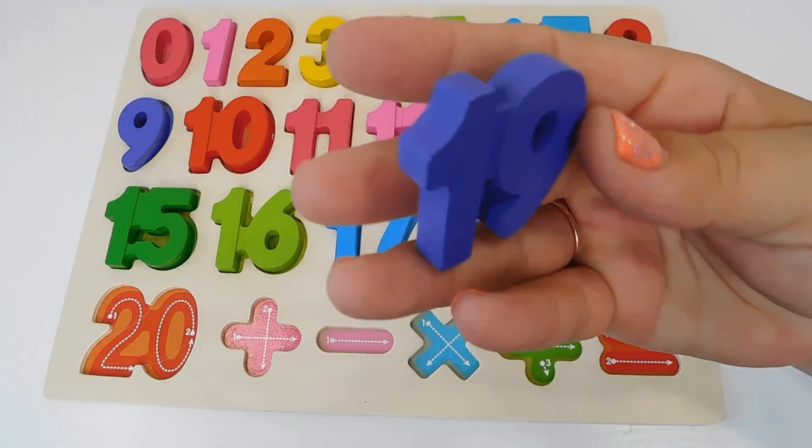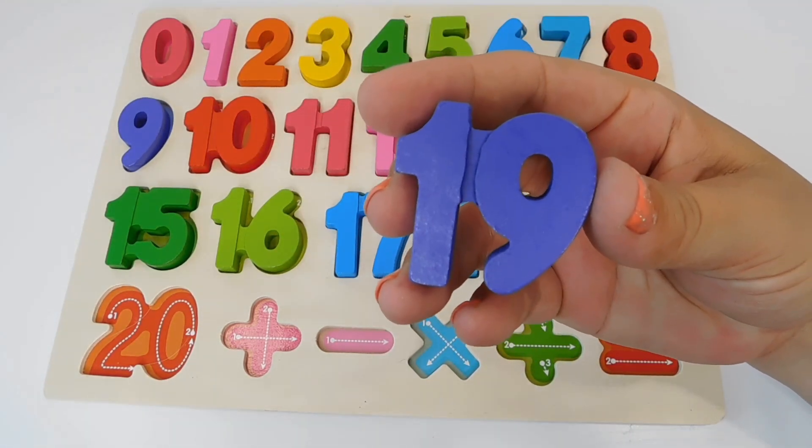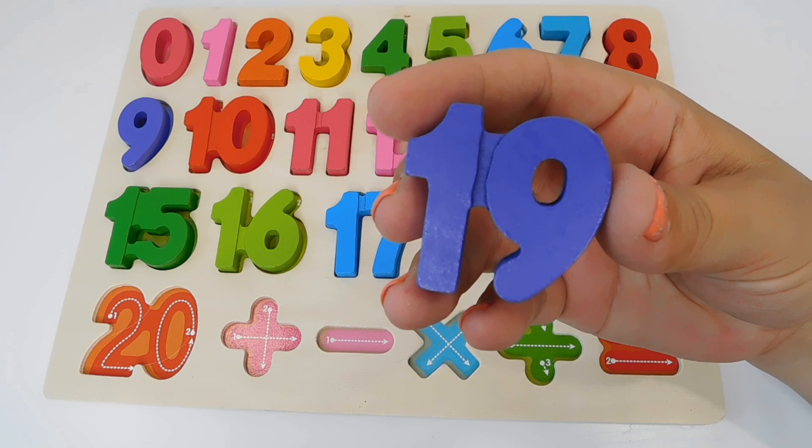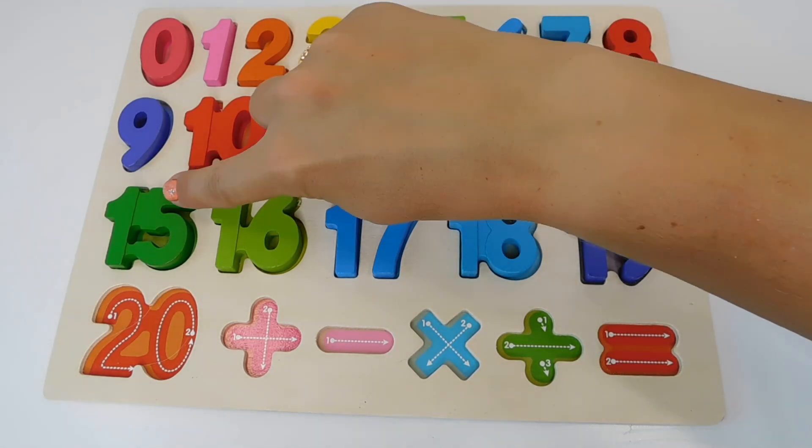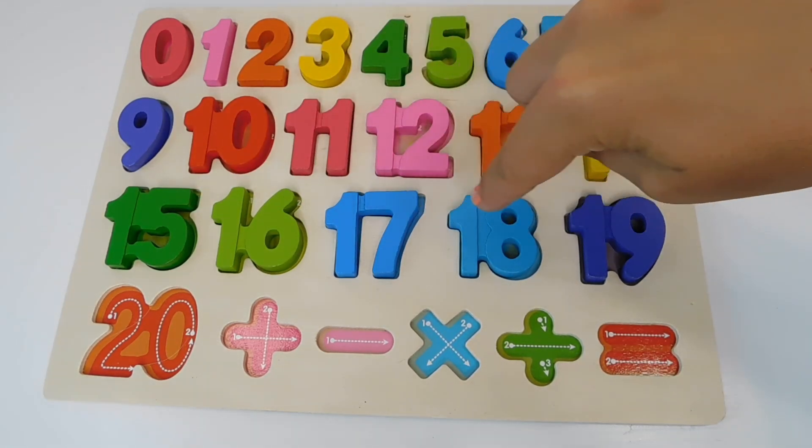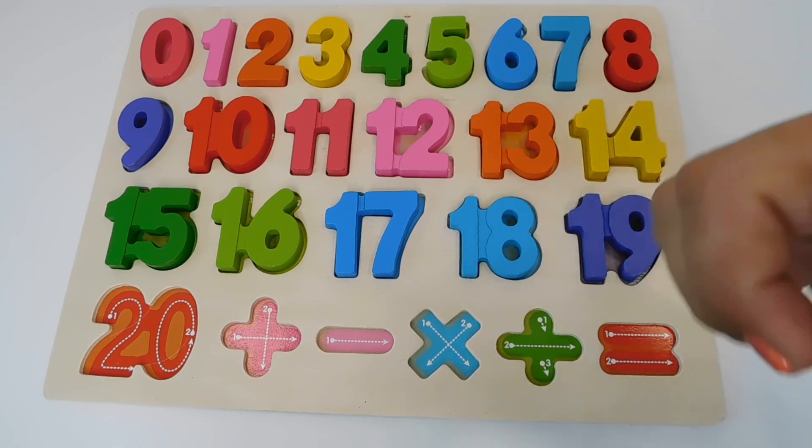Then we have 19. This is purple. 19. It has a 1 and a 9. 19. 15, 16, 17, 18, 19. Woohoo!